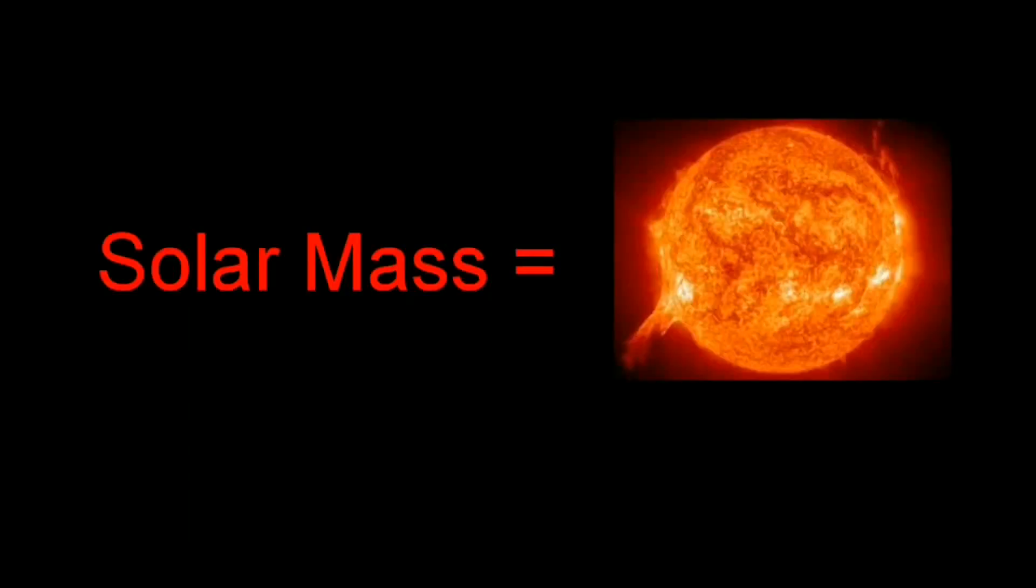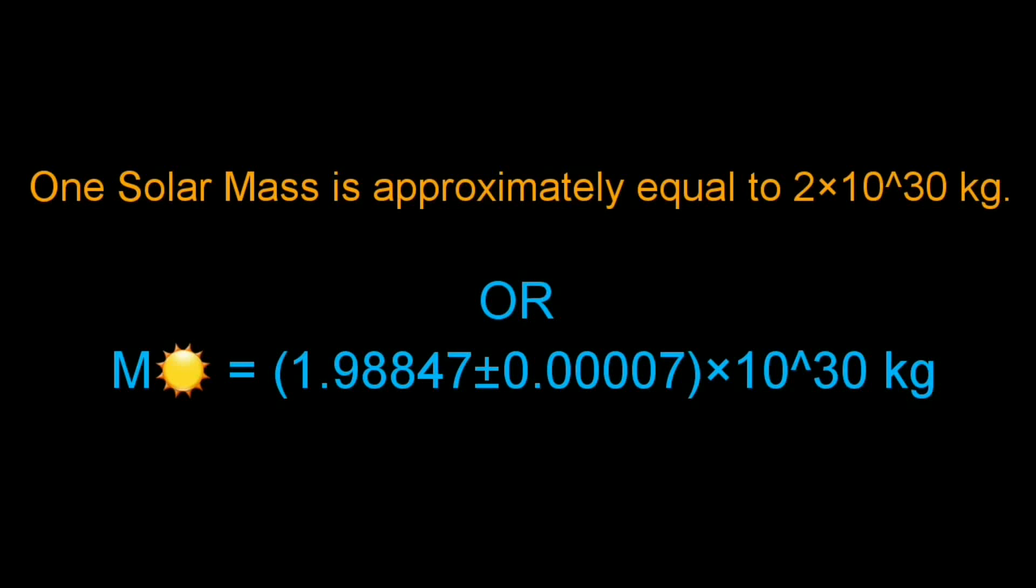Solar mass is defined as the mass of the sun. In simple terms, the sun's mass is called one solar mass. One solar mass is approximately equal to 2 × 10^30 kg.